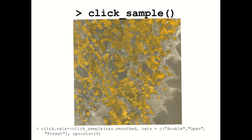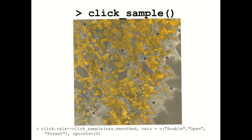Once you have your smooth map, you use the second function: click_sample. You tell the environment what colors each land use category has by clicking to get a range for each category — 10 clicks is usually good. For arable land, take the darkest yellows, the brightest yellows, and some of the palest yellows from across the whole map. Same with open areas: the lightest and darkest areas you still consider open, spread across the map. And then the same for forest: darkest to lightest, across the map.